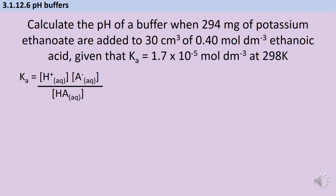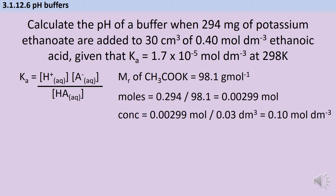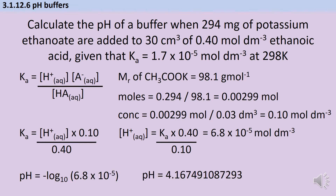Just as we did last time, we start with an expression for Ka. Then we work out the relative formula mass of the salt, which in this instance is 98.1. Using mass = Mr × moles rearranged, the number of moles of potassium ethanoate is 0.00299. Using the volume of the acid as the total volume, the concentration of the anion is 0.10 mol dm⁻³. Substituting the anion concentration and the acid concentration of 0.40 into the Ka expression and rearranging gives [H⁺] = 6.8 × 10⁻⁵. Taking the negative log base 10 gives a pH of 4.167..., which rounds to 4.17.